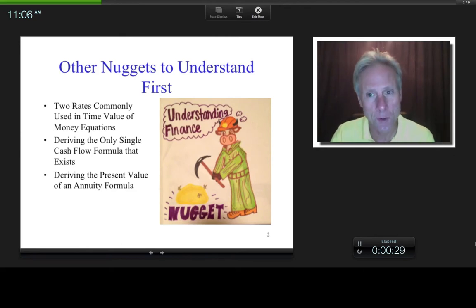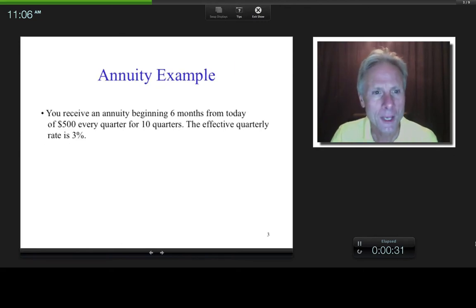Let's get to the problem. You receive an annuity beginning six months from today of $500 every quarter for 10 quarters and the effective quarterly rate is 3%. And by the way, what is an annuity? Equal cash flows between equal time periods over a finite period of time. So at some point it ends.